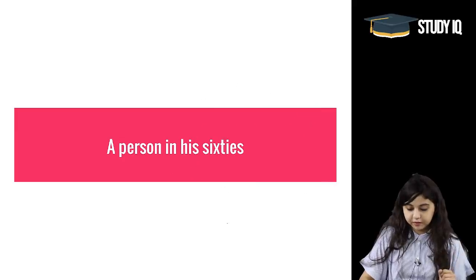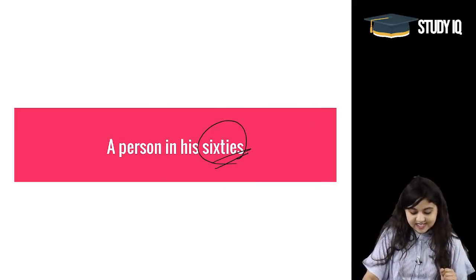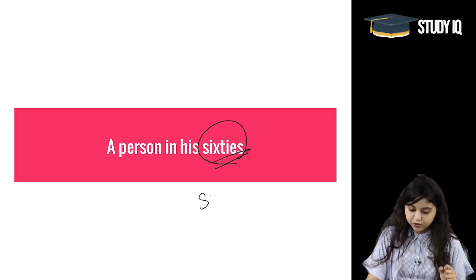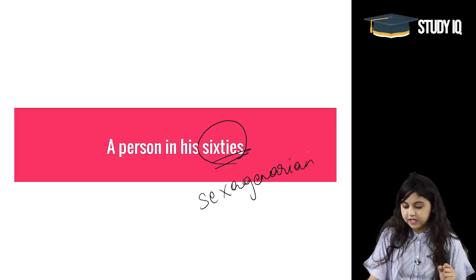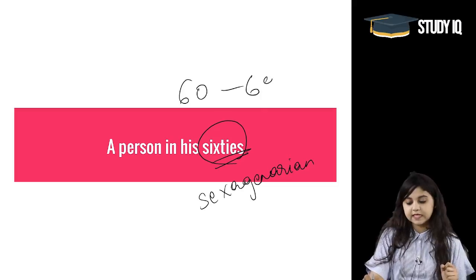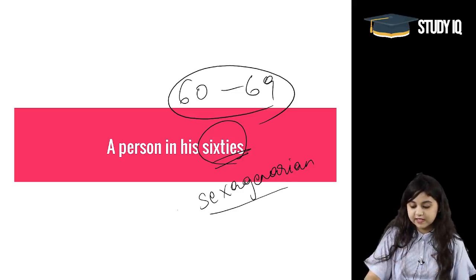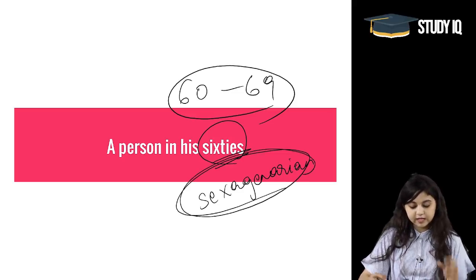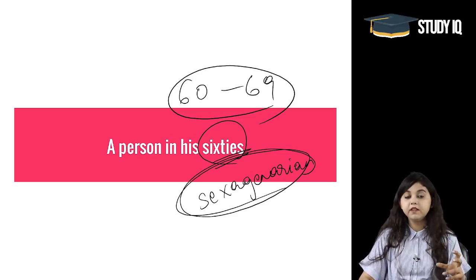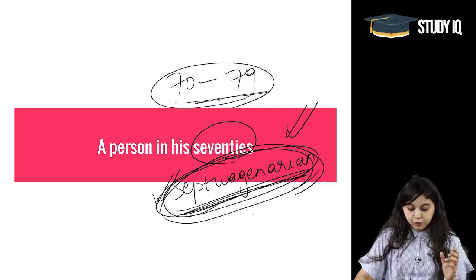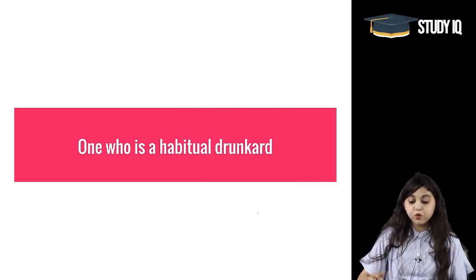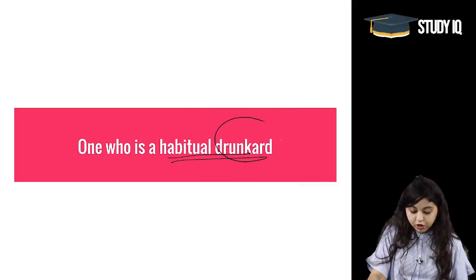A person in his 60s is called a 'sexagenarian.' So sexagenarian refers to someone who is between 60 and 69 years old. To recap: sexagenarian is for the 60s, and septuagenarian is for a person who is in his 70s.